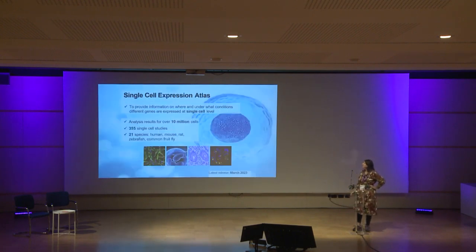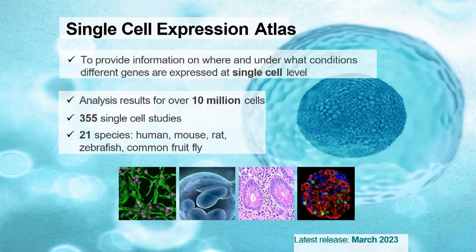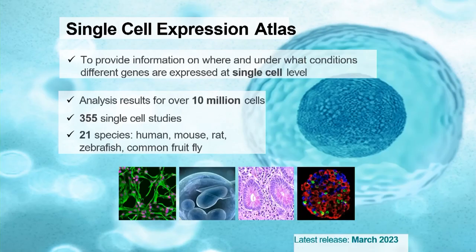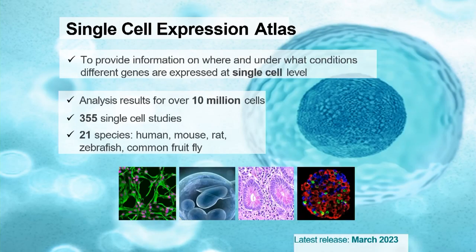A little bit more information about the Single Cell Expression Atlas. Our overarching mission is to provide information on what conditions different genes are expressed at the single cell level. We have analysis results for over 10 million cells, across over 355 single cell studies and over 20 different species, which includes human, model organisms, and the one I'm going to focus on — the common fruit fly, Drosophila melanogaster. The URL is www.ebi.ac.uk/gxa/sc, and our latest release was in March 2023.